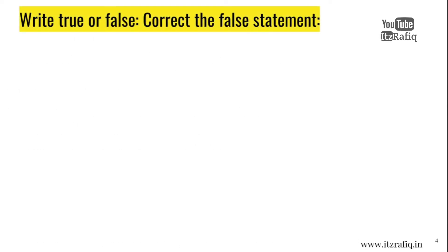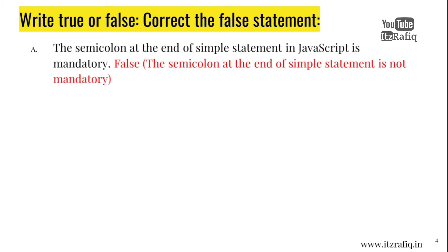Write true or false, correct the false statement. A. The semicolon at the end of simple statement in JavaScript is mandatory. FALSE. The semicolon at the end of simple statement is not mandatory.